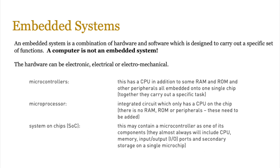The hardware can be electronic, electrical, or electromechanical. Embedded systems are classified into three major categories. The first is microcontrollers — here you have a CPU in addition to some RAM and ROM, along with other peripherals, all embedded into a single chip, carrying out one specific task. A microprocessor is an integrated circuit which only has a CPU on the chip — there is no RAM, ROM, or peripherals. So basically, a small CPU as we know it from the previous lesson.